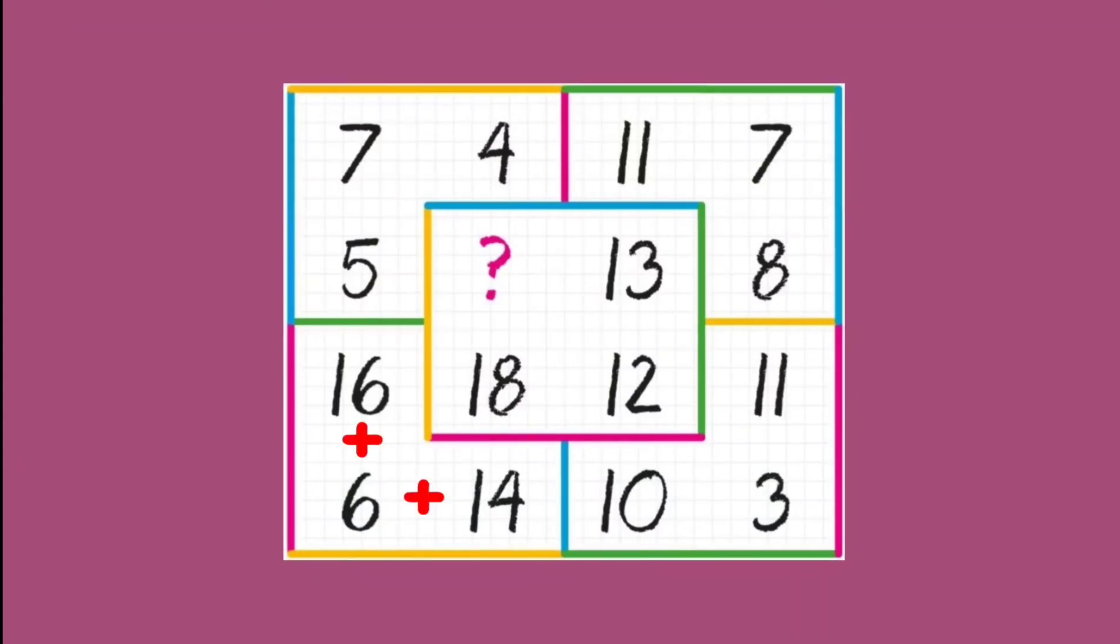See the numbers on the bottom left corner. When we add these three numbers, 16 plus 6 plus 14, we get 36. And half of 36 is 18. Now observe carefully that in the inner square on the same corner, the number 18 is there.